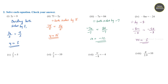Question number 5: j by 7 is equal to 5. We can multiply both sides by 7. So j by 7 into 7 is equal to 5 into 7, and the 7s cancel, giving j is equal to 35.